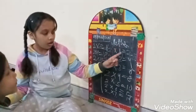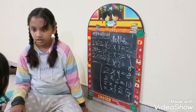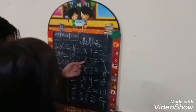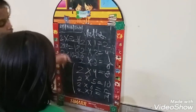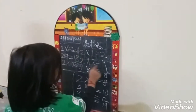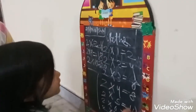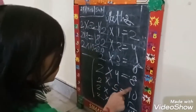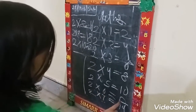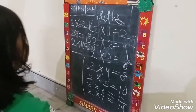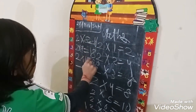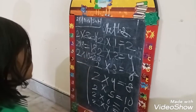Now roll number 1, let's try reading. Two, one, two. Two, three, four. Two, three, six. Two, four, eight. Two, five, ten. Two, six, twelve. Two, seven, fourteen. Two, eight, sixteen. Two, nine, eighteen. Two, ten, twenty.